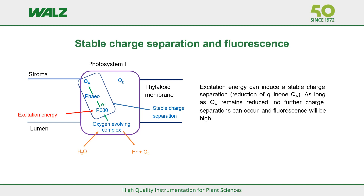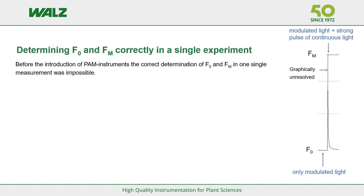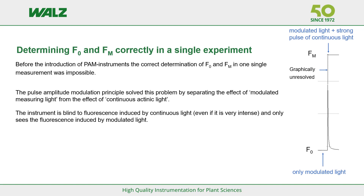It is important to realize that fluorescence is inversely related to photosynthesis — more fluorescence means less photosynthesis. Before the introduction of pulse amplitude modulation instruments, it was for technical reasons impossible to determine F0 and Fm correctly in a single experiment. The PAM method solved this problem by separating the effect of modulated measuring light, where LEDs give short pulses of light at a certain frequency, and continuous actinic light, which drives photosynthesis. PAM instruments are blind to fluorescence induced by continuous light, even very intense continuous light — they only see fluorescence induced by modulated light.